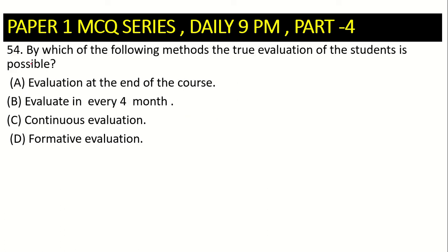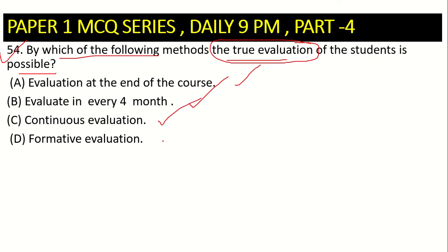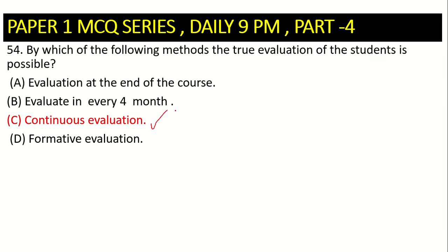Next, question number 54: by which of the following methods is the thorough evaluation of the student possible? Options: evaluation at the end of the course, evaluation every four months, continuous evaluation, or formative evaluation. You may be confused between options C and D, but formative evaluation means continuously evaluating. Since the word 'continuous evaluation' is given, we go with option C — continuous evaluation of students.